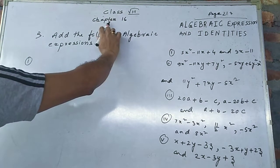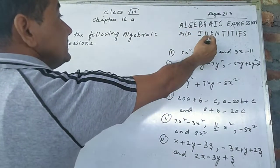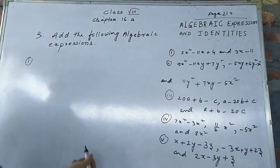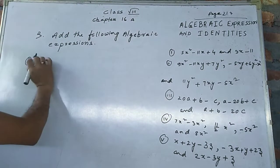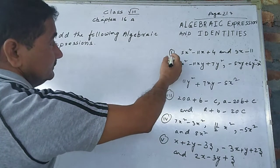Class 8, Chapter 16 A, Algebraic Expression and Identities, page 213. Adding algebraic expressions. I am taking two examples from the exercise.